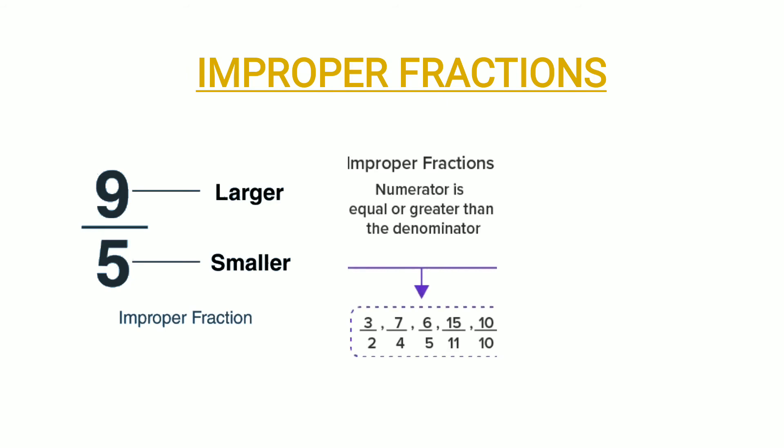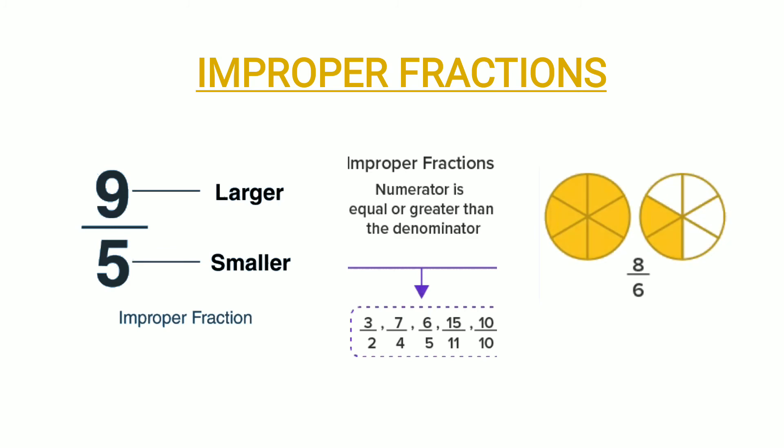Now, improper fractions. In improper fractions, the numerator is equal to or greater than the denominator — like nine upon five, where nine is the numerator and five is the denominator. Nine is larger than five, so such fractions are known as improper fractions. As you can see two circles here, eight upon six is an improper fraction.